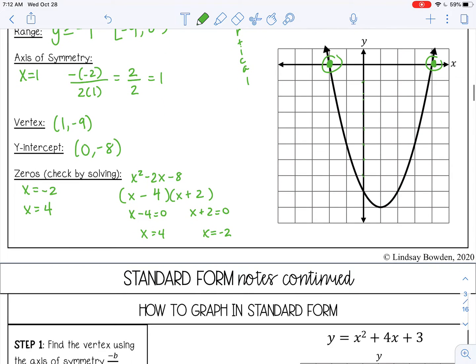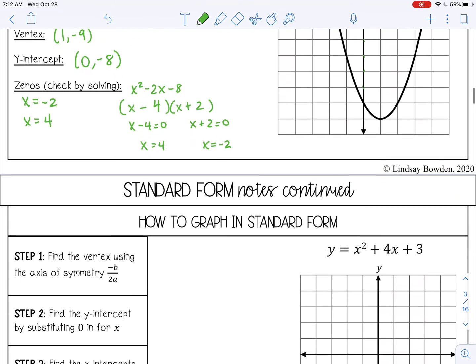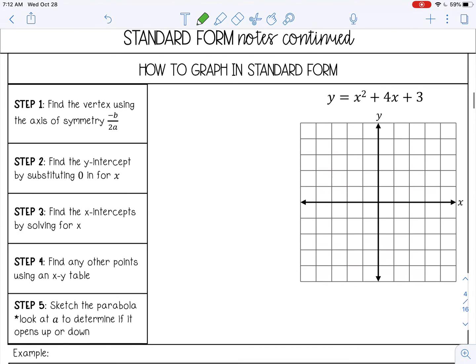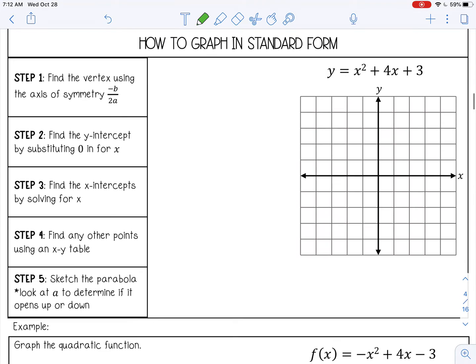Let's learn how to graph in standard form. Step 1 is to find the vertex and the axis of symmetry. So negative b over 2a. Negative 4 over 2a is 1. So that will be negative 4 over 2, which is negative 2. So my axis of symmetry is going to be here at negative 2.